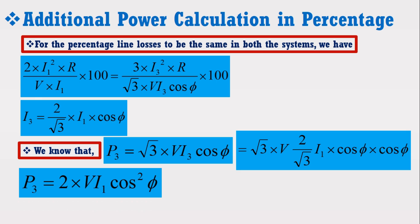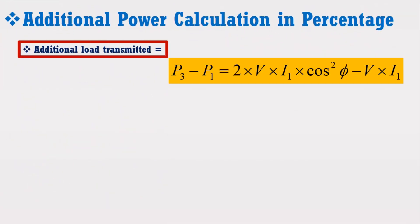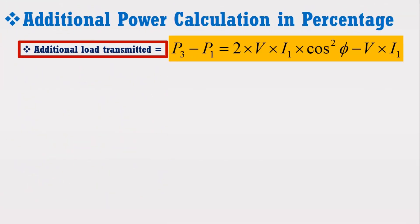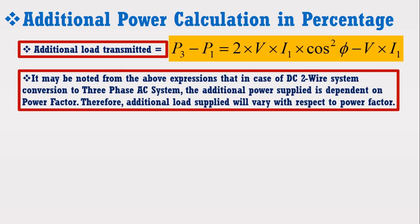Now, additional load transmitted will be equal to the difference of the two powers. It may be noted from the above expression that in the case of DC 2-wire system conversion to a 3-phase AC system, the additional power supplied is dependent upon the power factor. Therefore, additional load supplied will vary with respect to power factor, meaning we have to calculate percentage additional power separately for different power factors.